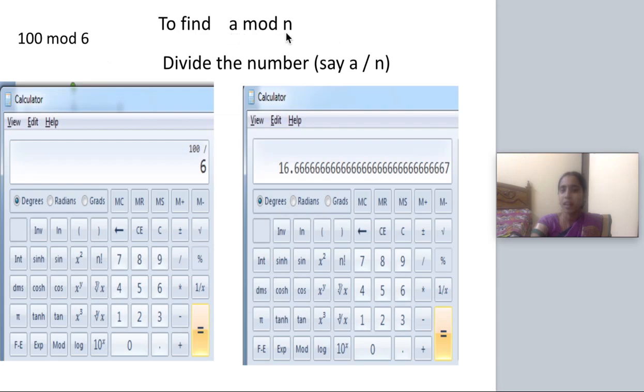The general format is a mod n. Suppose a is greater than n, how to find a mod n? I am taking an example: 100 mod 6. Here it is a very simple process using a calculator.